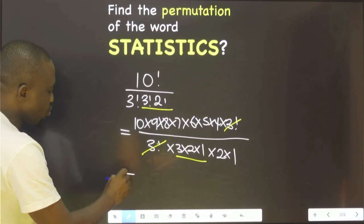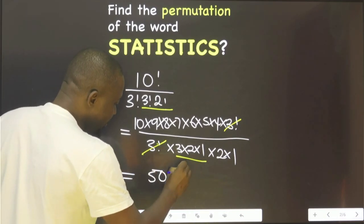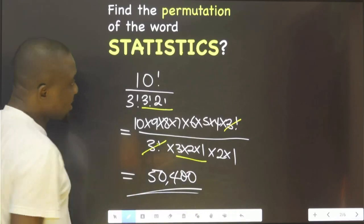Once you do this, the next thing you need to do is use your calculator. You're going to have 50,400. So this is the answer.